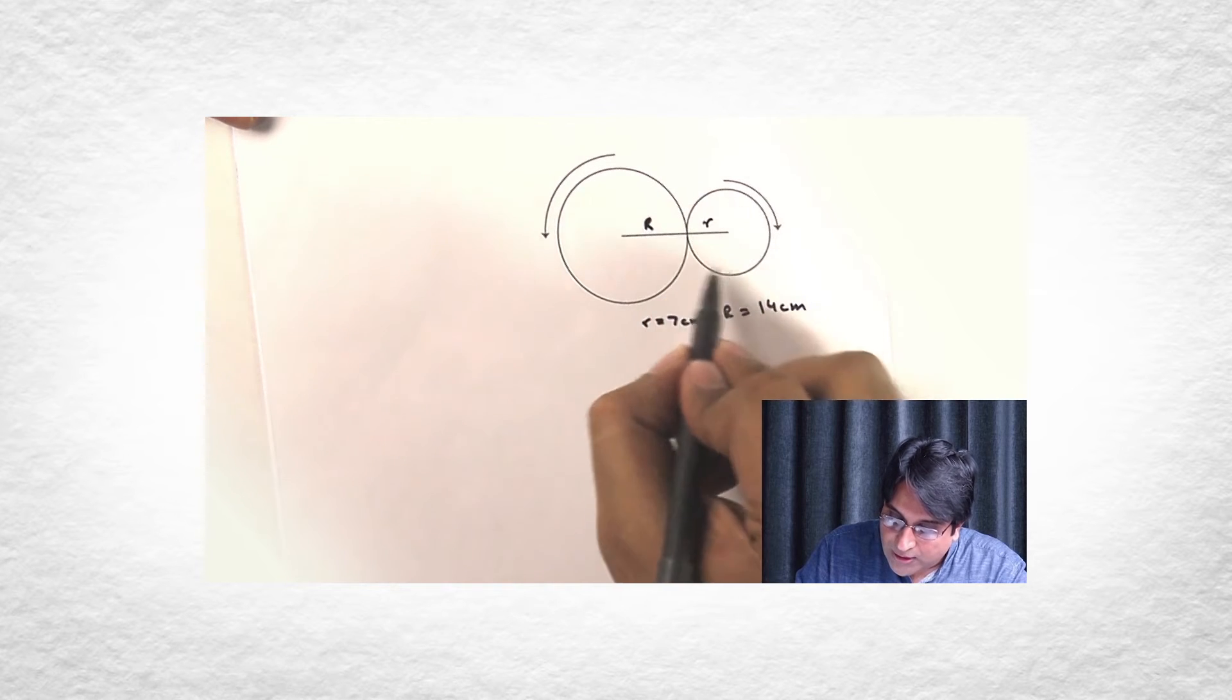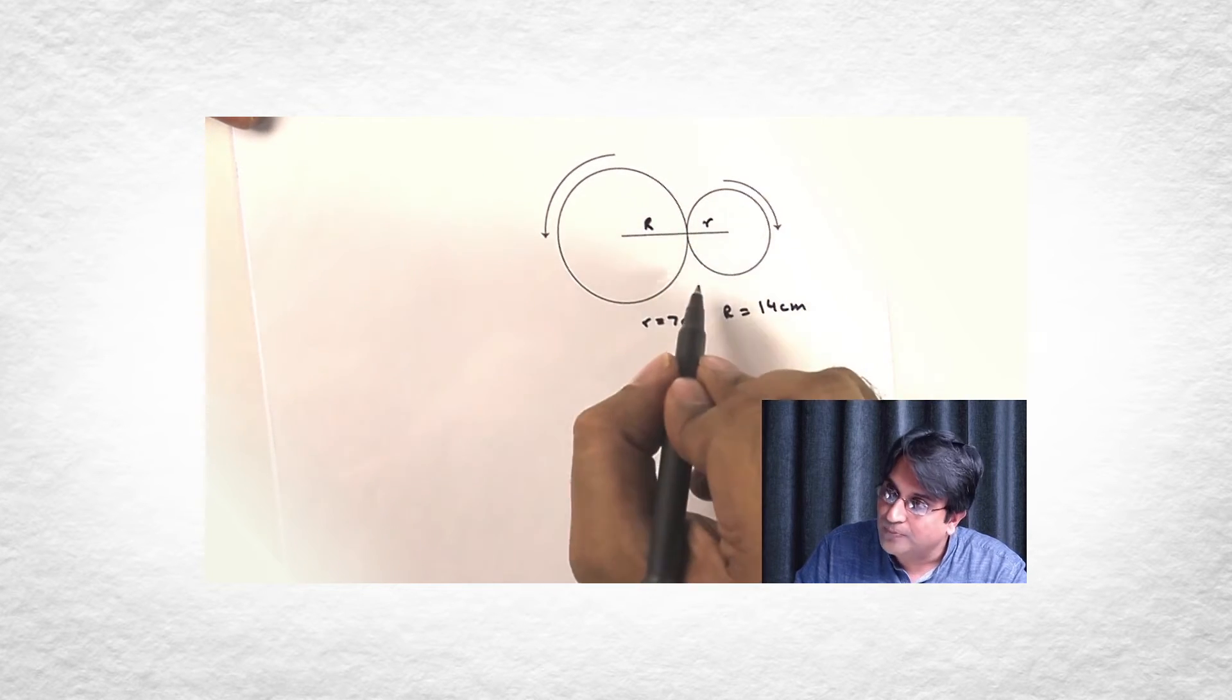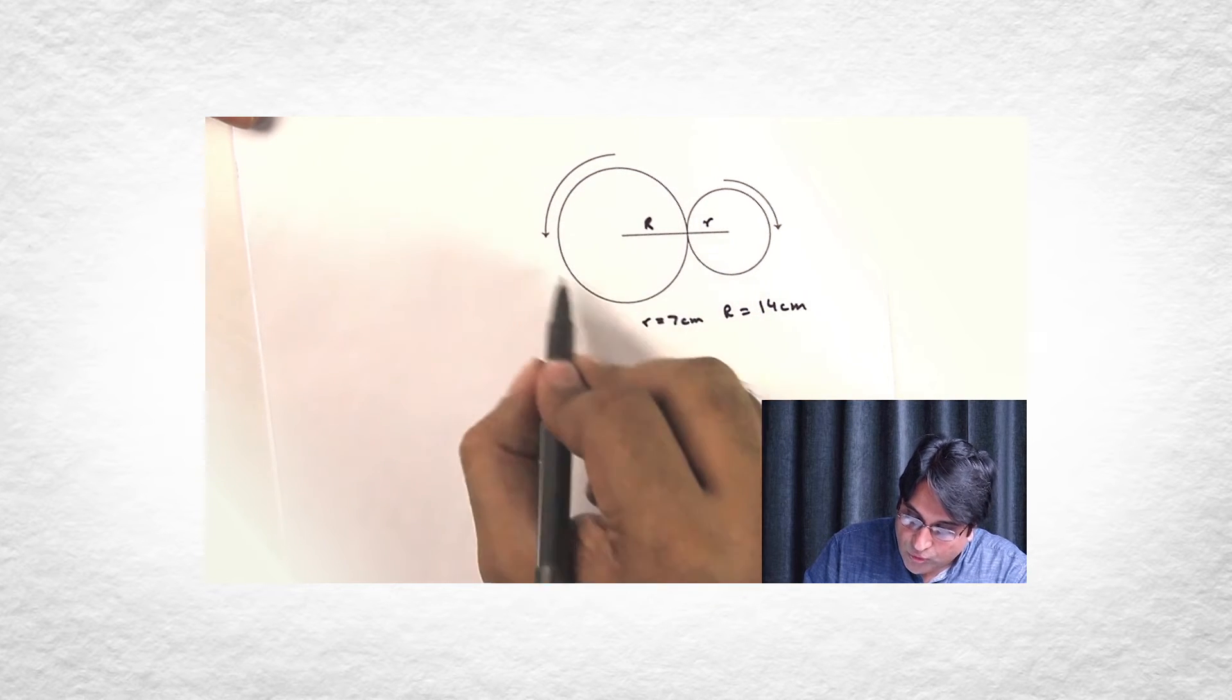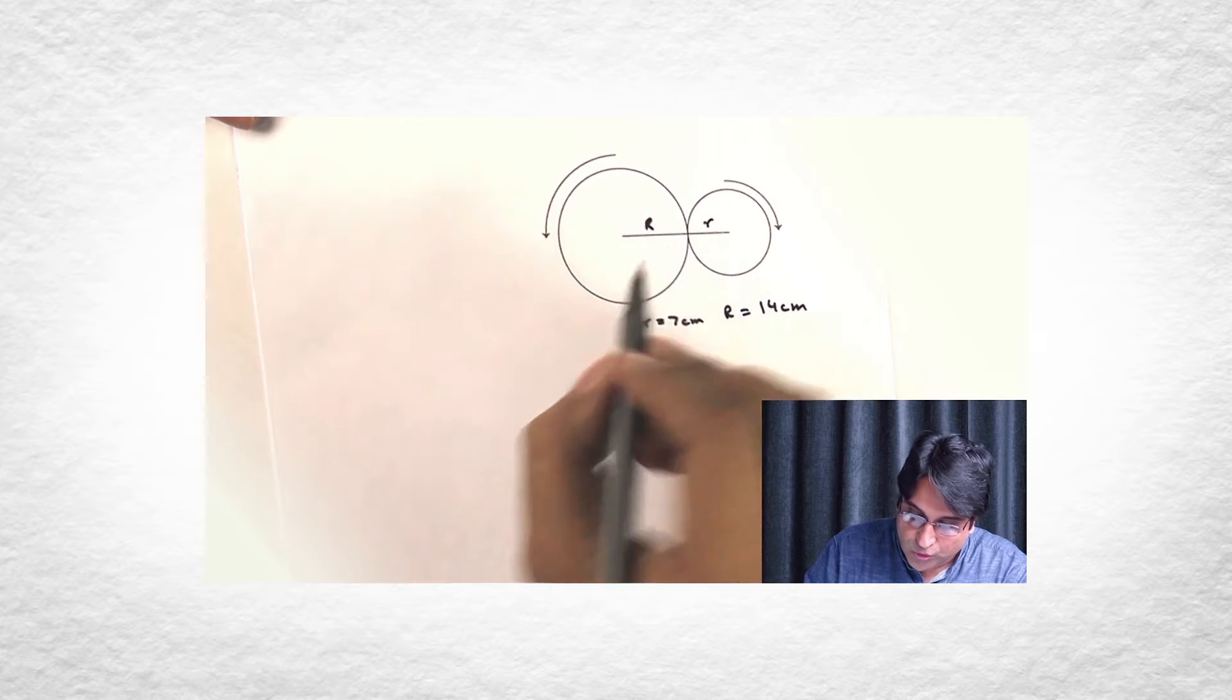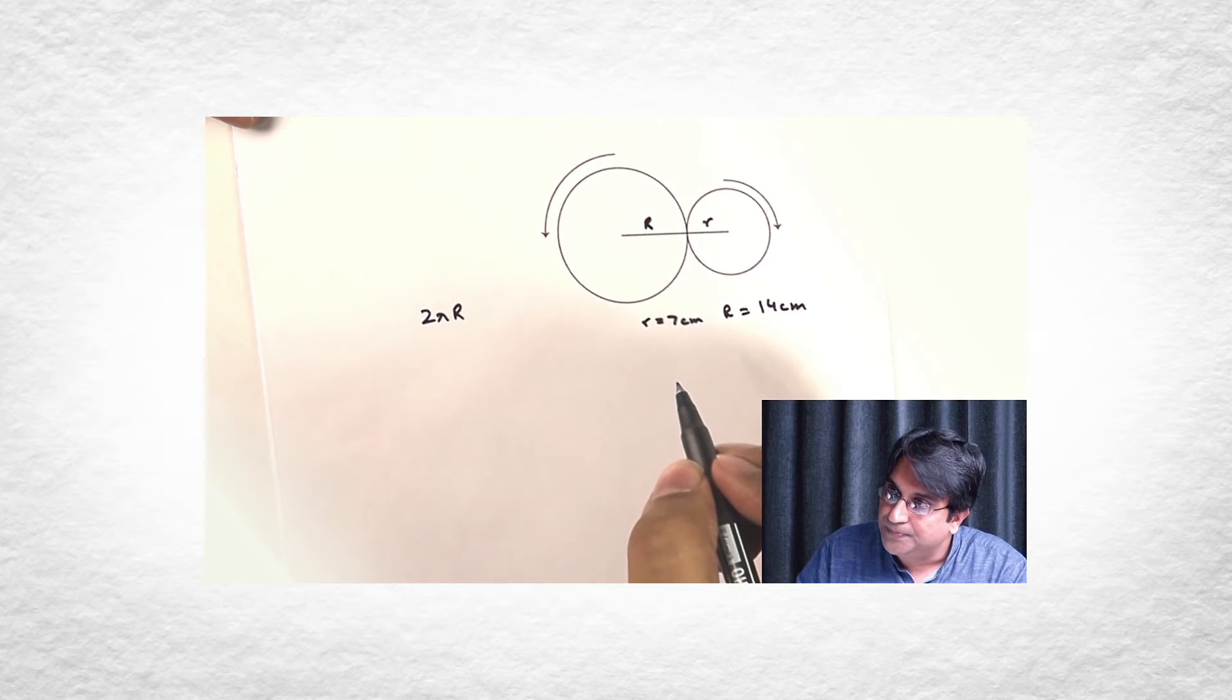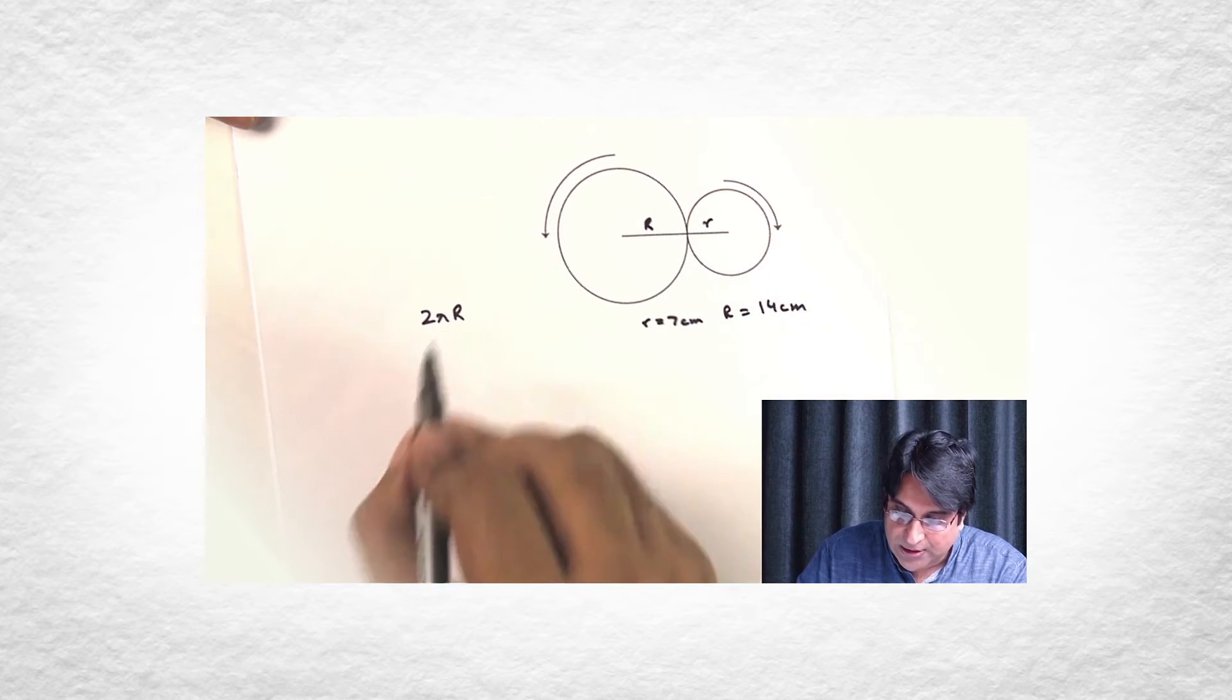So it has to rotate like once and by that time this might have rotated a little bit. And then it has to go some more. Now how much more? Now see, in order for this to rotate completely, this point should go through 2πr. Right? So the distance passed through it, so to speak, has to be 2πr.